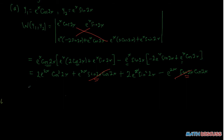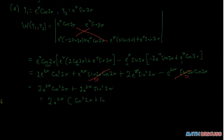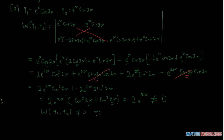We are left with 2e to the power 2x cosine squared of 2x, plus 2e to the power 2x sine squared of 2x. We can factor out 2e to the power 2x to get 2e to the power 2x times the quantity cosine squared of 2x plus sine squared of 2x. Applying the trigonometric identity that cosine squared plus sine squared equals 1, we get 2e to the power 2x times 1, which is 2e to the power 2x. Since the exponential function is never equal to 0, the Wronskian of y1 and y2 is not 0, which implies that y1 and y2 are linearly independent.